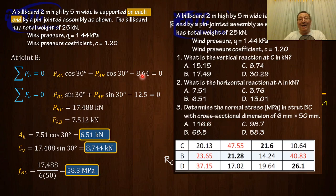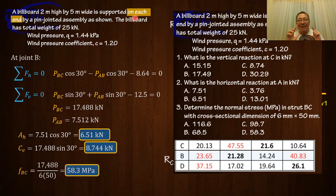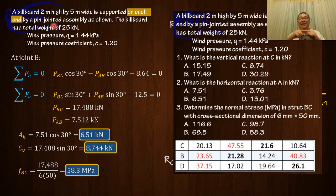If you didn't divide by two, your answers would be double — that's why many chose letter D for part 2: double of 6.51 is 13.01. For part 1, double of 8.744 is 17.49, which is why many chose letter B. I'm not saying it's as simple as just dividing by two — you have to understand the problem, which is why reading carefully is essential.